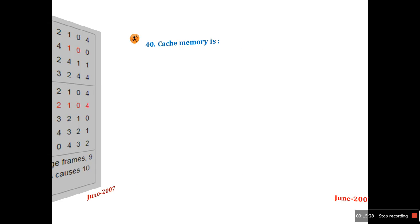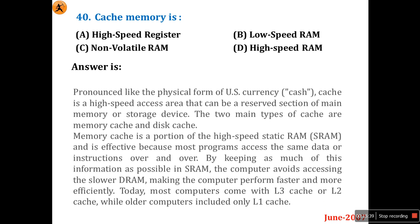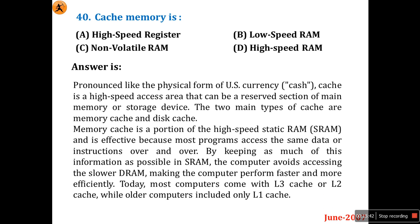Next question: cache memory is — a high-speed register, low-speed RAM, non-volatile RAM, or high-speed RAM? Cache memory is high-speed RAM. Cache is a high-speed access area that can be a reserved section of main memory or a storage device. The two main types are memory cache and disk cache.